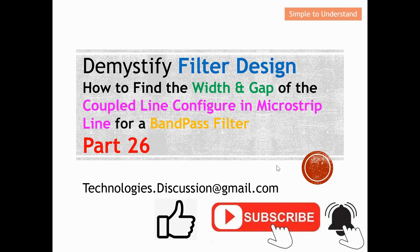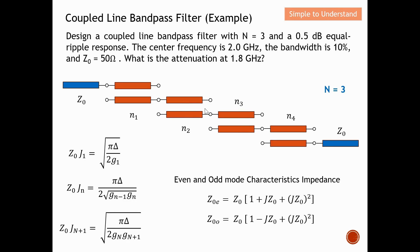Let me do a quick summary of the first video. I introduced three sets of formulas: one for the first section n1, one for the last section, and one for the intermediate sections n2 and n3 in between. Using these formulas, I managed to calculate the even and odd mode characteristic impedances. Please refer to the first video if you need more detail.